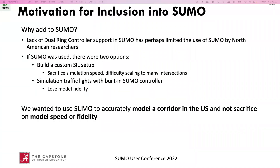Why add a NEMA-style dual ring controller to SUMO? It's been our impression at the University of Alabama that the lack of a dual ring controller inside of SUMO has discouraged North American users from using SUMO. If North American traffic modelers wanted to use SUMO and model a traffic network with dual ring-style traffic light controllers, they had to make a tough choice: either build a custom software-in-the-loop setup with an external traffic light controller module, or use a built-in SUMO controller and lose model fidelity. In both cases, they're making sacrifices. So we wanted to use SUMO to model a corridor in the U.S. without sacrificing on model speed or fidelity, which ultimately meant building a NEMA-style dual ring controller into SUMO's source.